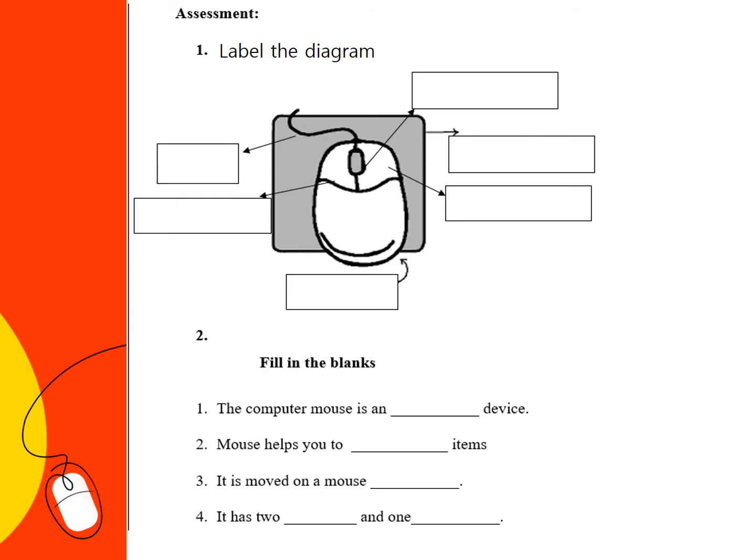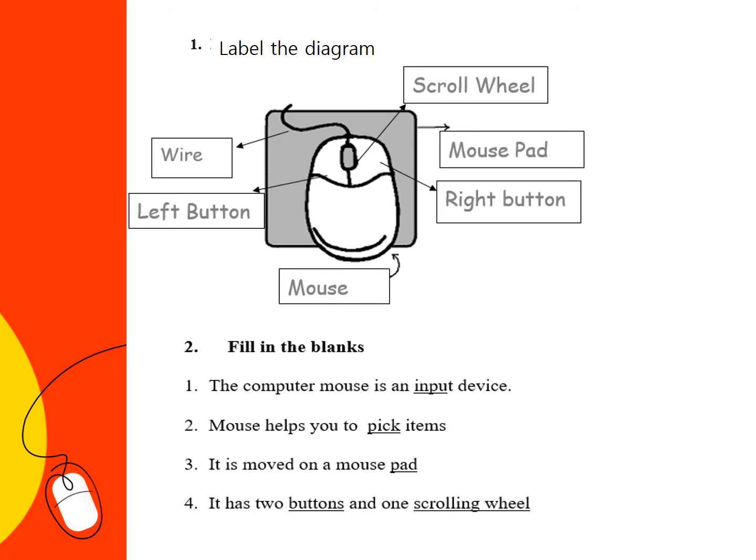Students, your first assessment is to label the diagram — write the parts of the mouse in the given boxes. And second is filling in the blanks. So the parts of the mouse are: